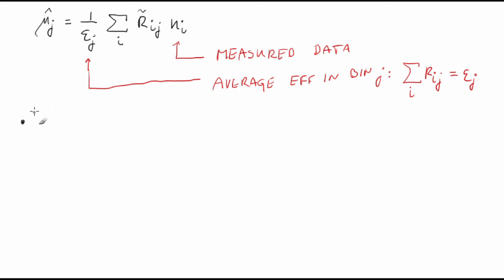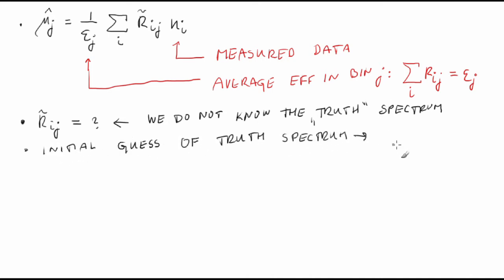Unfortunately, we don't have the unfolding matrix, because we don't know the truth spectrum. What the D'Agostini's method does is that it takes some first guess of the truth spectrum to build a first version of the unfolding matrix.